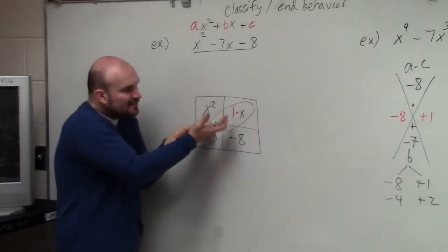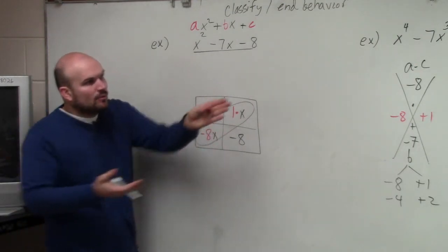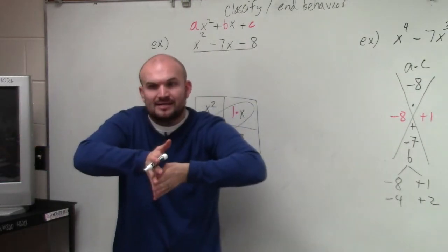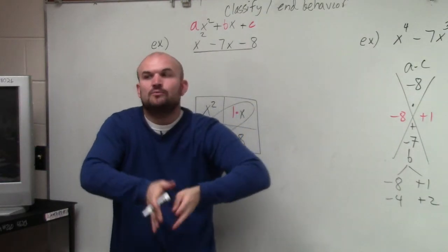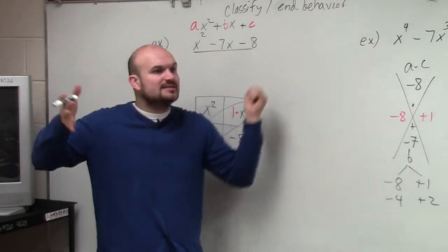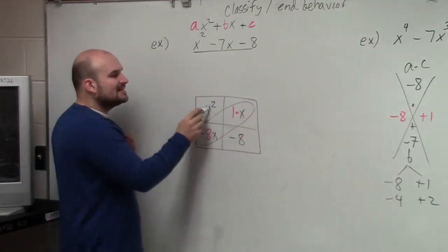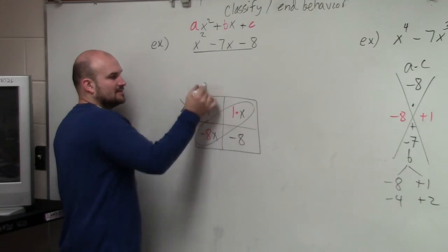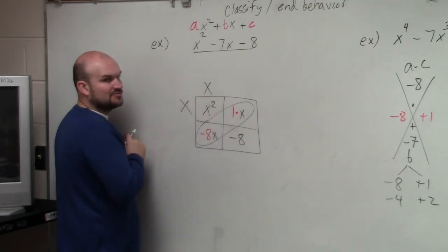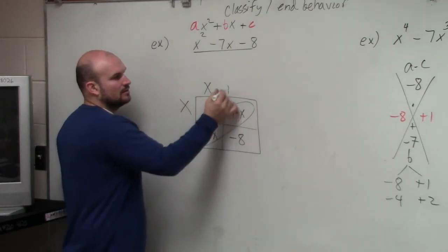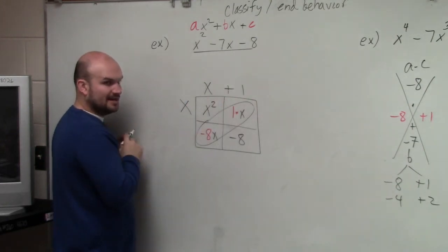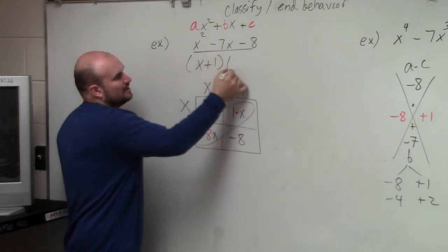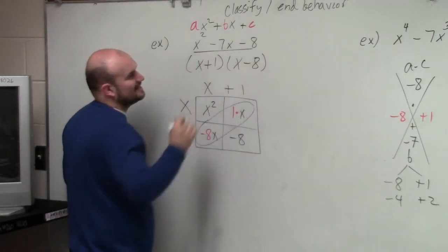We multiplied to find what was in the box. Now we want to determine what do I have to multiply to get what's in the box. So I say, what times what gives me x squared? x times x. x times what gives me positive 1x? x times what gives me negative 8x? So therefore, my factored form is x plus 1 times x minus 8.